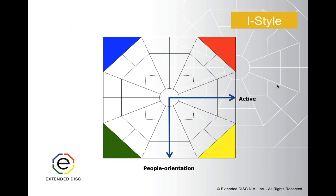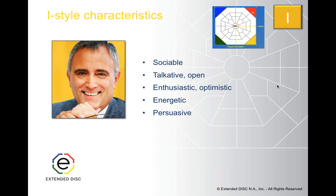All right, so let's go on to the I style. I styles are active, like D styles, but instead of being task-focused, they are people-oriented. We say the I style never meets a stranger — every interaction is an opportunity to socialize. So Hallie's going to take us right through the I style overview.